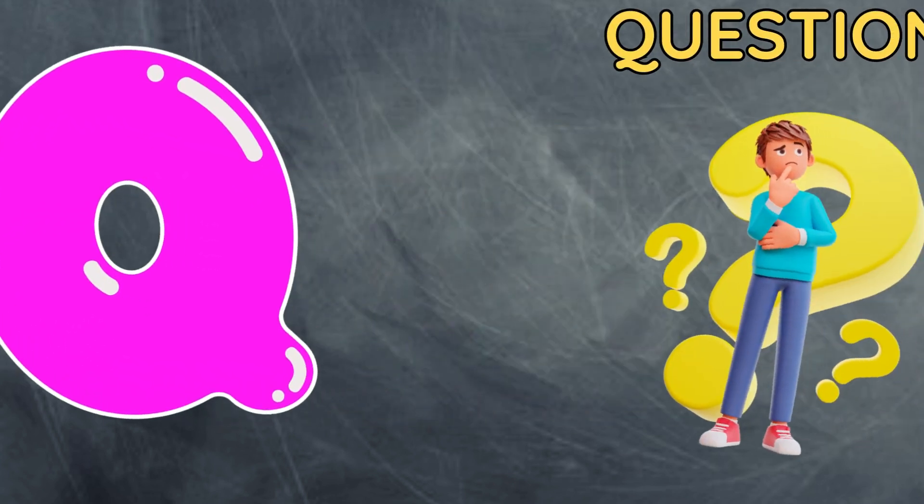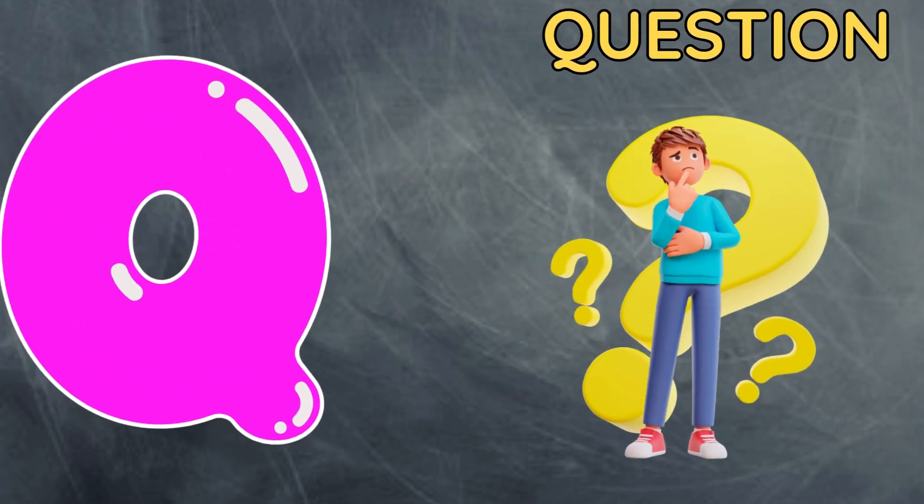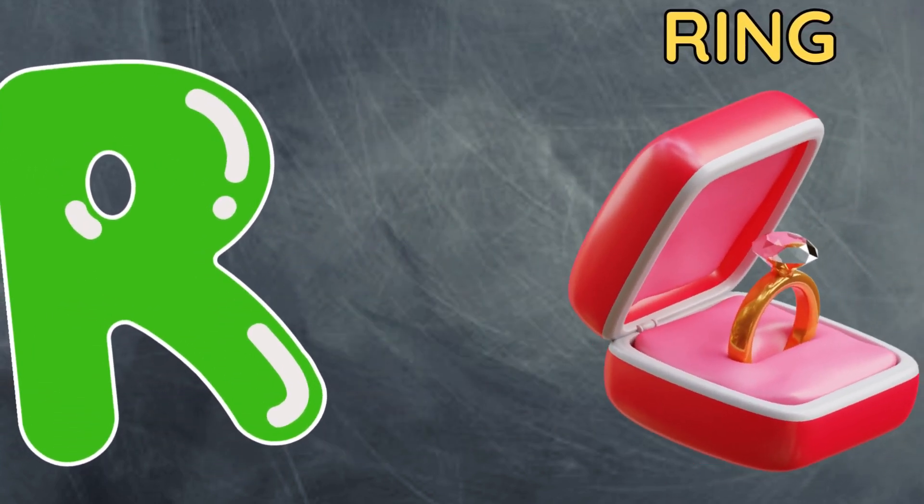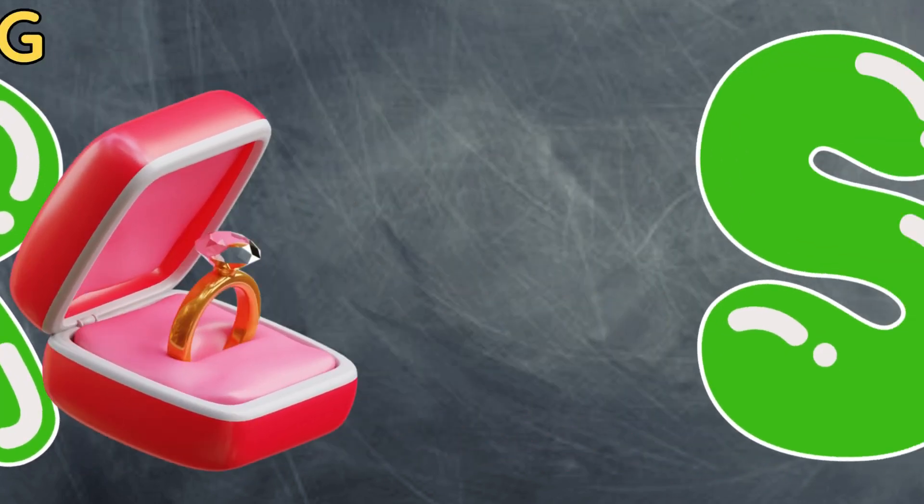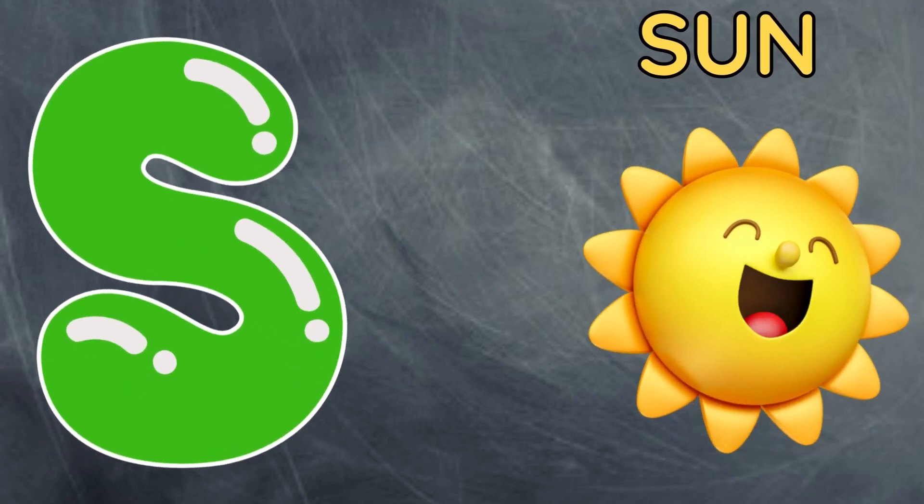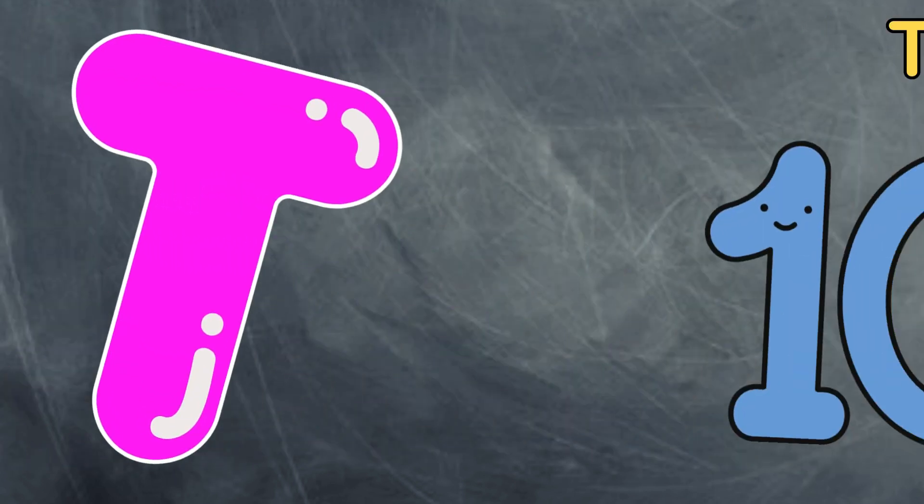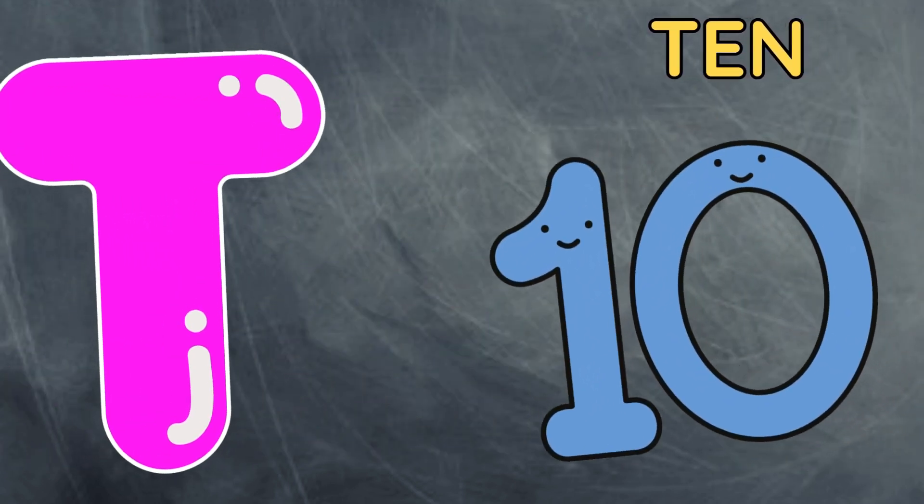Q is for question, q-q-question. R is for ring, r-r-ring. S is for sun, s-s-sun. T is for ten, t-t-ten.